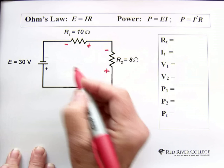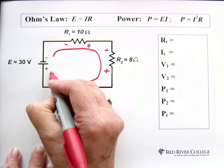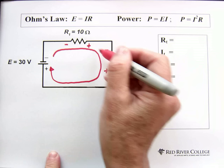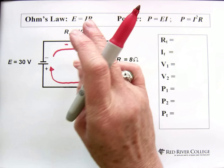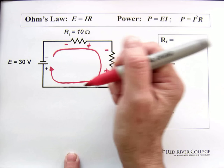And our current flows from the negative to the positive. You may have an instructor who shows you the current flowing the other way. In the end it doesn't really matter as far as computing all the information in the circuit. When they first started studying these things they believed that the current went from positive to negative, so that's why in some cases you'll see instructors drawing it that way.